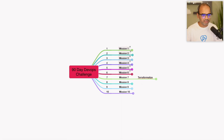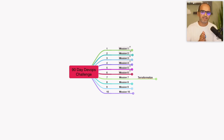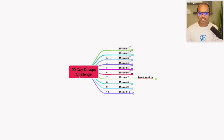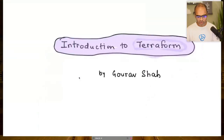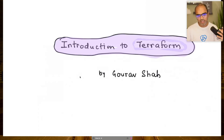Welcome to everyone in the chat — Abhishek, Ravi, Ajay, Swati, Prima, Sharad, Madala, Shiva Prasad. Let's get started with today's challenge on Terraform. I'll cover the introduction first, then demonstrate how you can build a two-tier infrastructure with an application server and database using Terraform — launching key services like compute, databases, and networking.